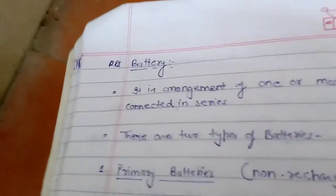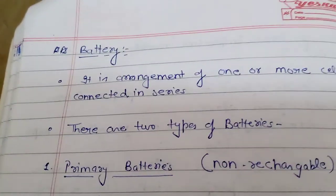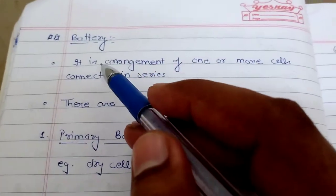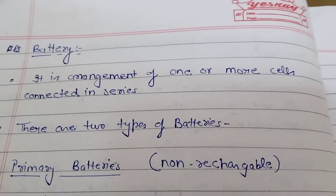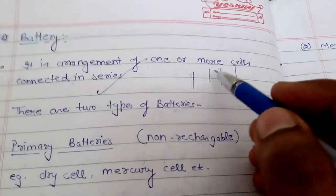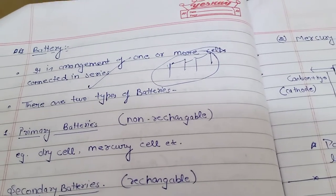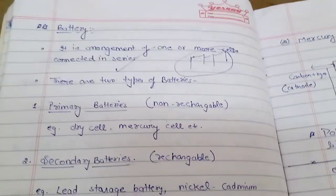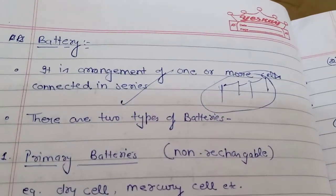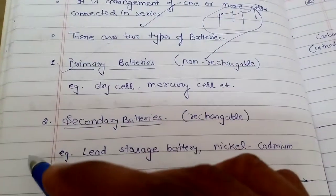Now let's move to battery - a very important topic. A battery is an arrangement of one or more cells connected in series. For example, if cells 1, 2, 3, 4 are connected in series, they form a battery. There are two types of batteries: primary battery and secondary battery.